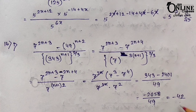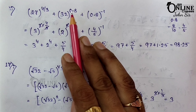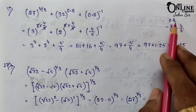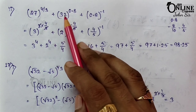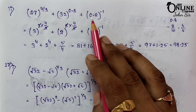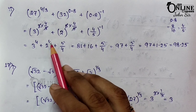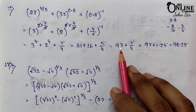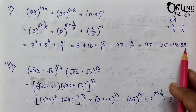Sum 16.2: (27)^(4/3) + (32)^(0.8) + (0.8)^(−1). Note 0.8 = 4/5. Here 27 = 3^3 so 27^(4/3) = 3^4 = 81; 32 = 2^5 so 32^(4/5) = 2^4 = 16; (4/5)^(−1) = 5/4 = 1.25. So 81 + 16 + 1.25 = 98.25.